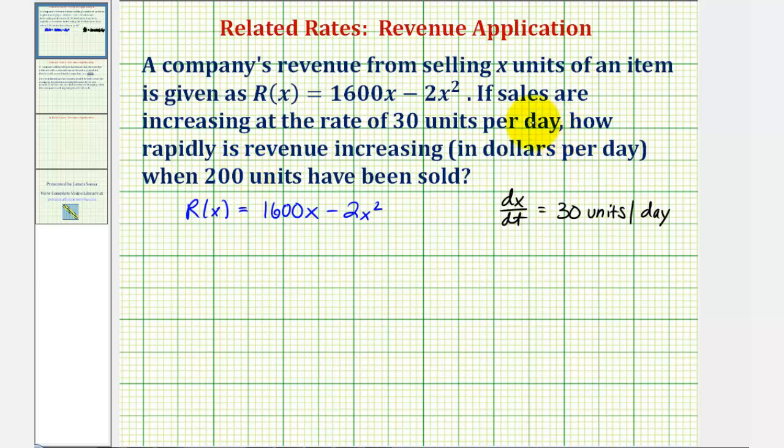We're asked to find how rapidly revenue is increasing, which is the change in revenue with respect to t, or dR/dt, when 200 items have been sold, meaning when x = 200.